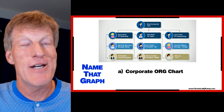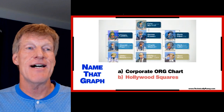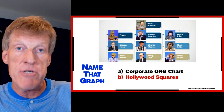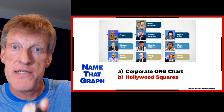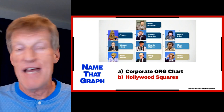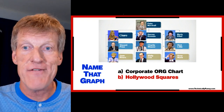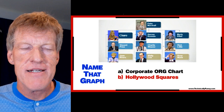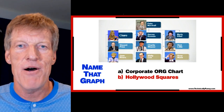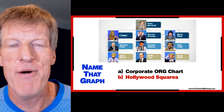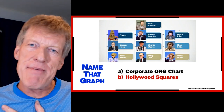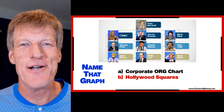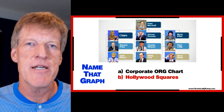Whenever I see an org chart, I think it looks like Hollywood Squares. It does — it looks like Hollywood Squares. Peter Marshall's there as your host, he's at the top. Then you have all the regulars: Charo, Charlie Weaver, Paul Lynn. You got to love Paul Lynn — comedy icon Paul Lynn. Maybe a little nostalgia, but maybe you'll smile next time you see an org chart. You'll think of Hollywood Squares. That's how today's bit works — some comedy in your future.